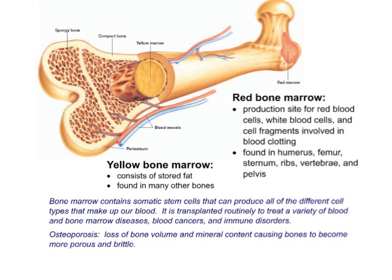Here is a diagram showing two kinds of bone marrow. Red bone marrow is the production site for red blood cells, white blood cells, and cell fragments involved in blood clotting. It's found in the humerus, femur, sternum, ribs, vertebrae, and pelvis. Yellow bone marrow is found in many other bones and consists mainly of stored fat. Bone marrow contains somatic stem cells — not embryonic stem cells — which can produce all the different cell types that make up our blood. It is routinely transplanted to treat blood and bone marrow diseases, including blood cancers and immune disorders.